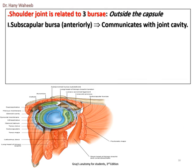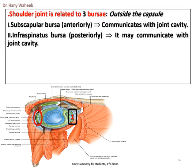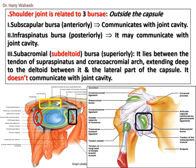The shoulder joint is related to three bursae outside the capsule. 1. The subscapular bursa, anteriorly, communicates with the joint cavity. 2. The infraspinatus bursa, posteriorly, may communicate with the joint cavity. 3. The subacromial (subdeltoid) bursa, superiorly — it lies between the tendon of supraspinatus and the coracoacromial arch, extending deep to the deltoid between it and the lateral part of the capsule. It does not communicate with the joint cavity.